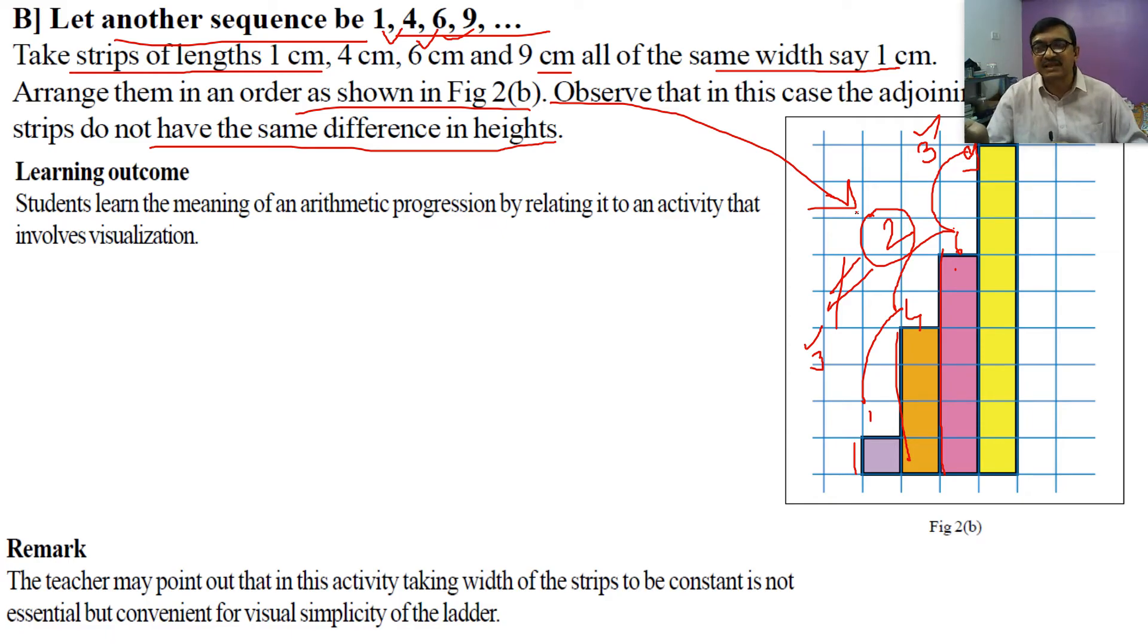What is the learning outcome? What do we want to learn from this? Students learn the meaning of an arithmetic progression by relating to it an activity that involves visualization. Children can understand by seeing it.